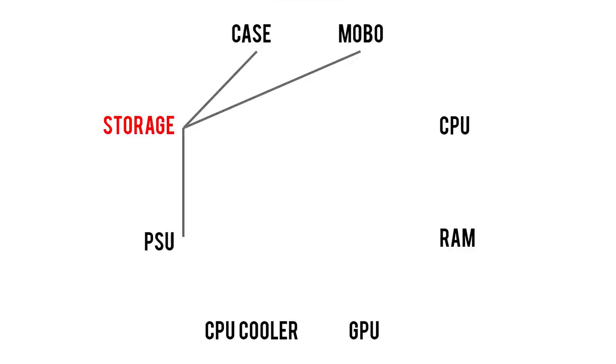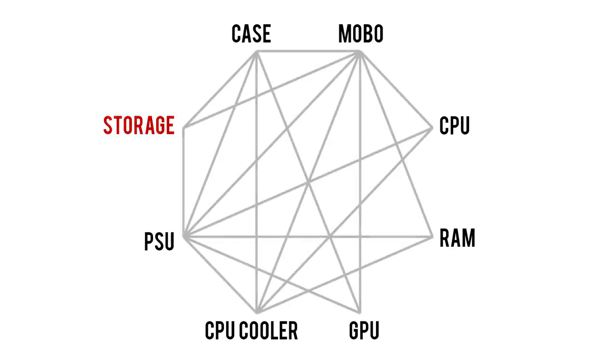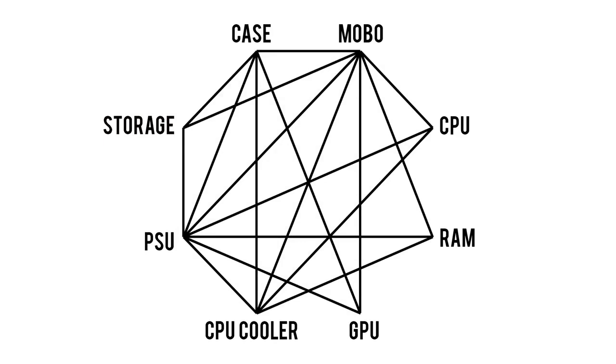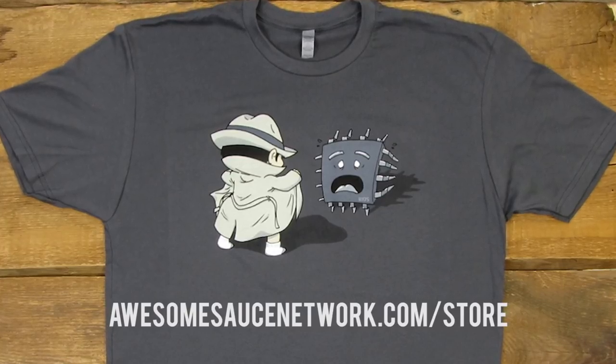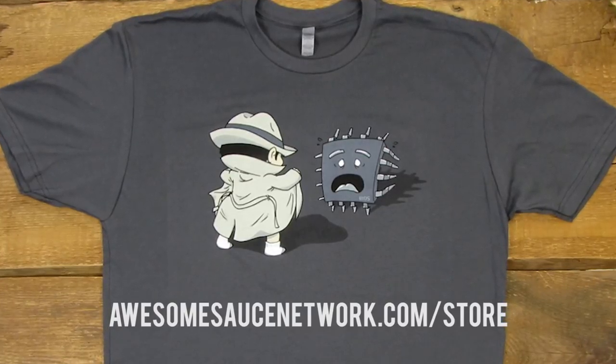That leaves us to storage, but by now we've exhausted all of its various part associations, thus concluding today's lesson on the Octagon of Compatibility. I know this was a lot of information, and there's a fair chance I overlooked a few things myself. If you're a seasoned PC builder watching this, please share any compatibility tips I might have missed in the comments — our rookie tech friends will appreciate it. Don't forget to toss me a like if you enjoyed it, and check the description for my BIOS flasher shirt. As always, I'm Kyle with Awesome Sauce Network — thank you guys for watching, subscribe if you haven't already, and I'll see y'all in the next video.